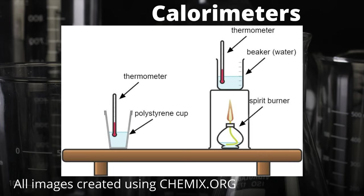The calorimeter apparatus on the right-hand side is used for finding the enthalpy change of a combustion reaction. Since we can't just put the thermometer directly in the flame where the reaction is taking place, we have a spirit burner which burns our fuel underneath a beaker of water and we record the temperature change in the water instead. Some extra readings we would have to take for this apparatus would include recording the mass of the spirit burner before and after the apparatus has been used, so that we can see what mass of fuel has been used in the reaction.